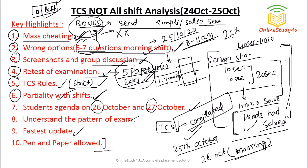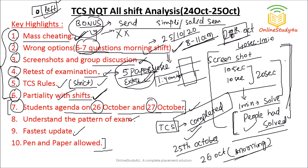Till 27th of October, all slots are already occupied by 19th, 20th, and 21st batch students, so you might be getting your retest after 27th as well. Keep checking your spam folder for the TCS mail. Now, what should be the student agenda on 26th and 27th of October? When you know all these things, you can properly plan how you are going to write your examination.